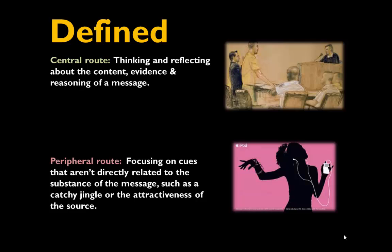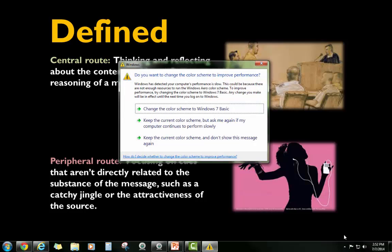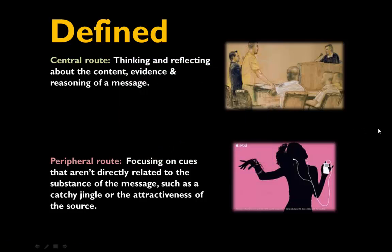Hey folks, we're going to briefly talk about the elaboration likelihood model, which is another one of the persuasion theories based in the field of psychology. There are two primary routes to persuasion: the central route and the peripheral route. The central route is all about thinking and reflecting about the content, evidence, and reasoning of a message — think about something like a courtroom situation. With the peripheral route, you're processing the persuasive message peripherally rather than centrally, focusing on cues not directly related to the substance of the message, like a catchy jingle or the attractiveness of the source. All the advertising for iPods is a great example of persuasive messages put together with peripheral route processing in mind.